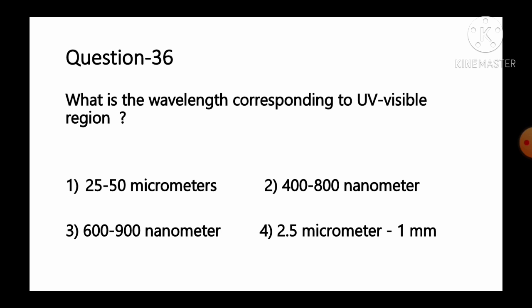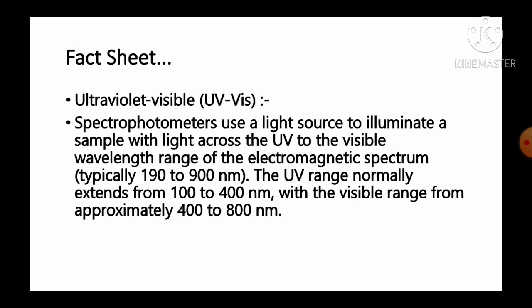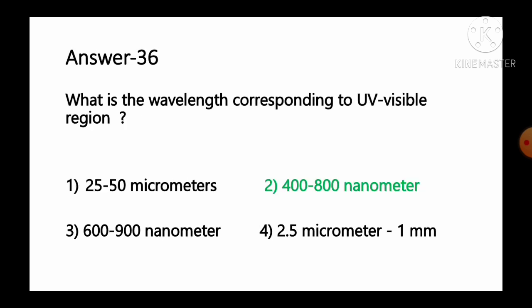Question number 36: What wavelength corresponds to the UV-visible region? Options: 1 25 to 50 micrometers, 2 400 to 800 nanometers, 3 600 to 900 nanometers, 4 2.5 micrometers to 1 millimeter. UV-visible spectrophotometers use a light source across the UV to visible wavelength range, typically from 190 to 900 nanometers. The UV range normally extends from 100 to 400 nm, with the visible range approximately 400 to 800 nm. So option number 2, 400 to 800 nanometers, is the correct answer.